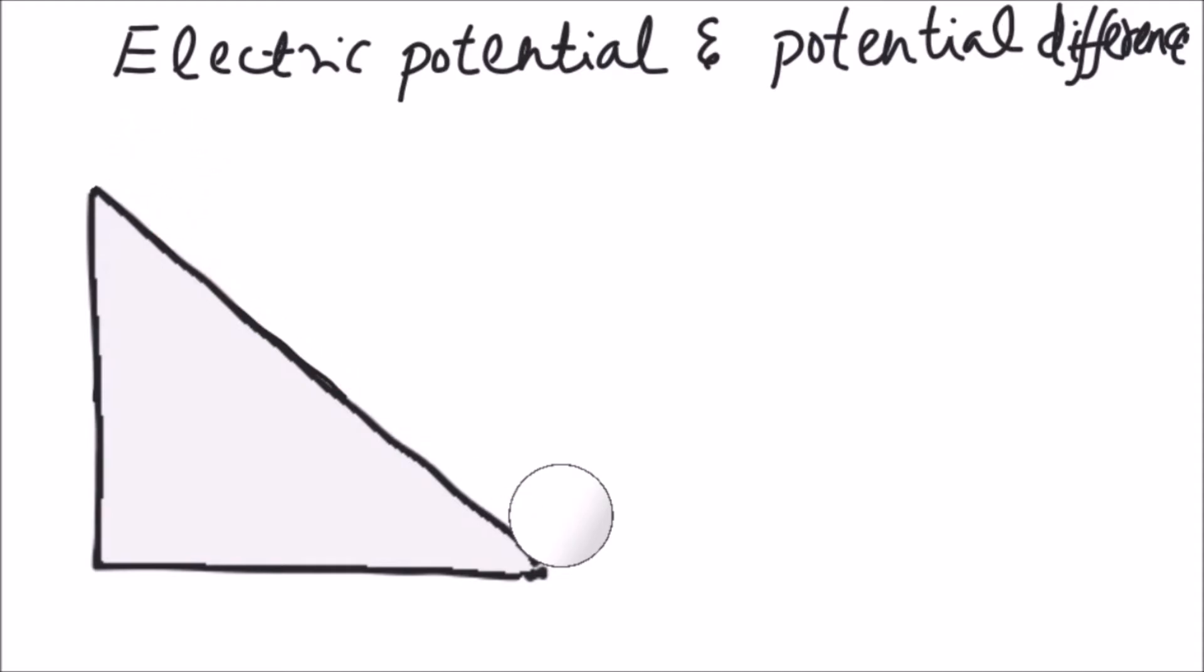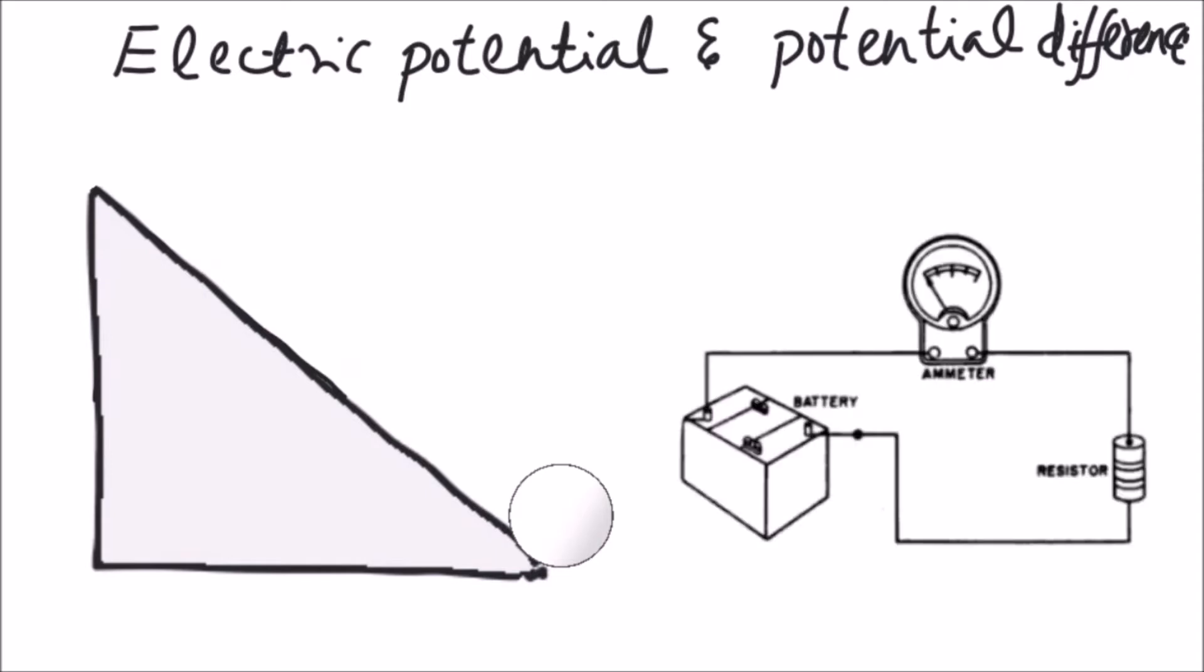It comes down because there was a potential difference from this point to the ground which made the ball come down. In a similar way, electric potential difference makes the electrons move from higher potential to lower potential.